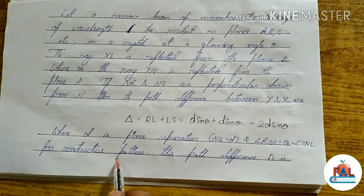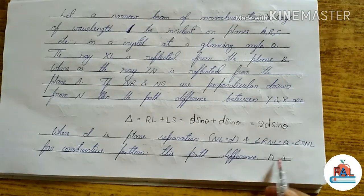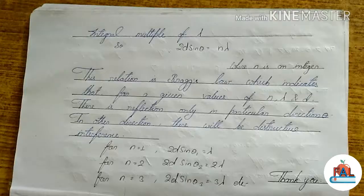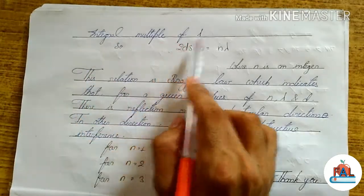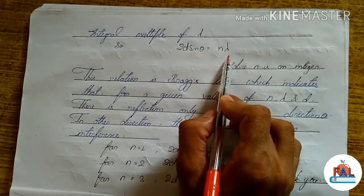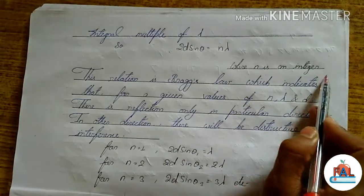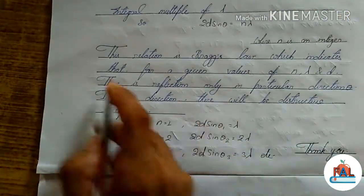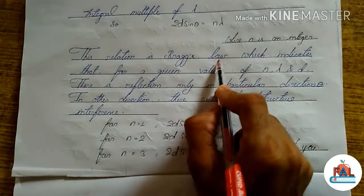For constructive pattern, this path difference is equal to integral multiples of lambda. So 2D sin theta equals n lambda, where n is an integer. This relation is Bragg's law.